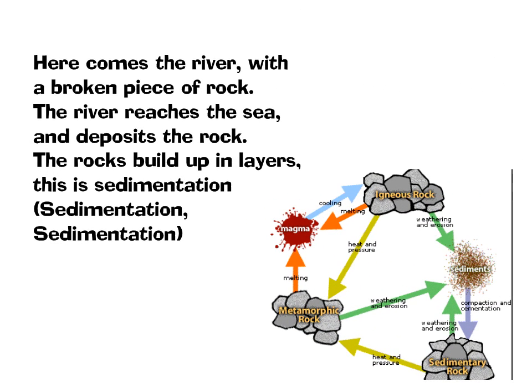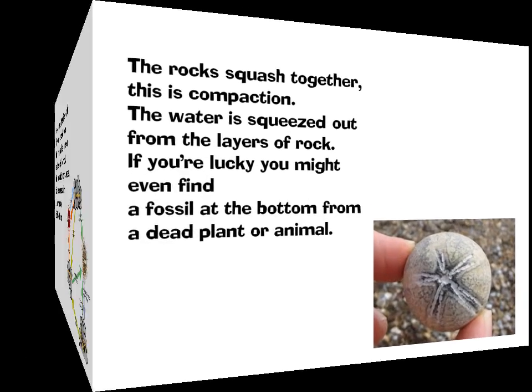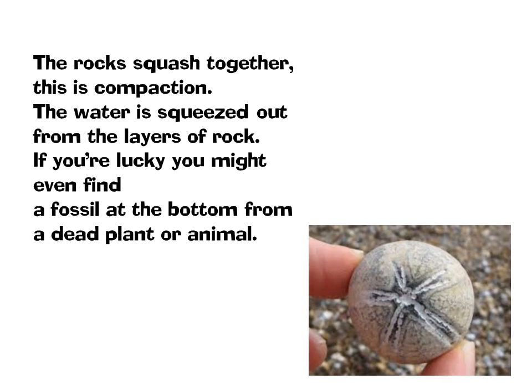Here comes a river with a broken piece of rock. The river reaches the sea and deposits a rock. The rocks build up in layers — this is sedimentation. The rocks wash together, this is compaction. The water is squeezed out of the layers of rock.